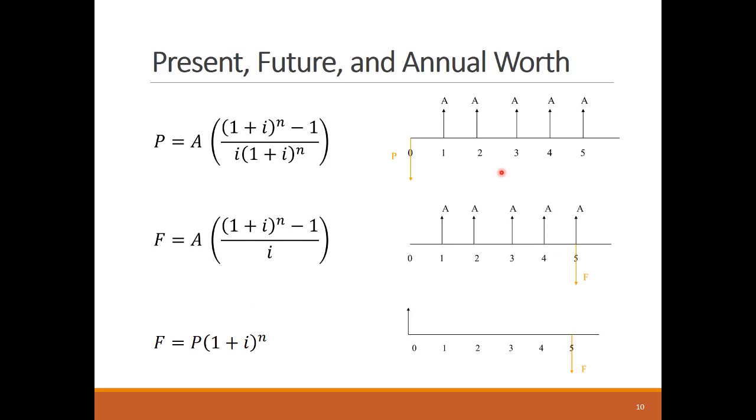We can summarize here that we need mainly three formulas to analyze the cash flows of a typical equipment. A formula that relates a uniform series to its present worth. A second formula to relate the uniform series to its future worth. And a third formula to relate a single sum cash flow in the future to a single sum cash flow in the present. We can also deal with the inverse versions of these formulas depending on the given values in the analysis problem.